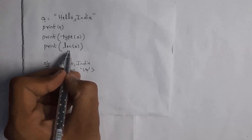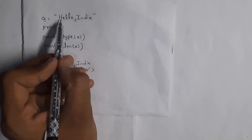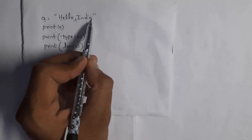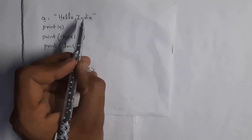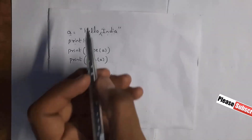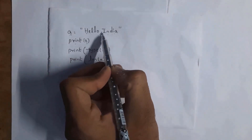Next I written print len(a), where len is the length function. It will count how many characters are present inside the string. Here h, e, l, l, o, comma, I, n, d, i, a — total there are 11 characters present. So it will display output 11. Here comma is also considered as a single character and will occupy length. Similarly, if you write hello space India, the space is also considered as a single character.